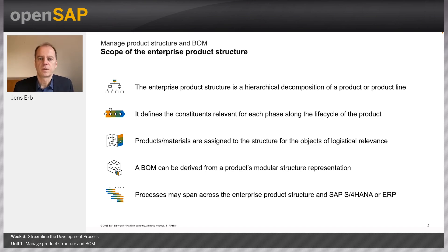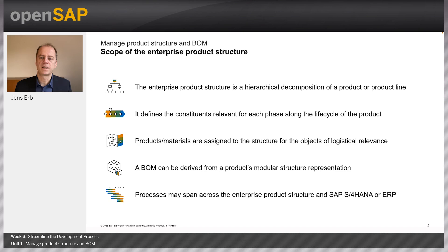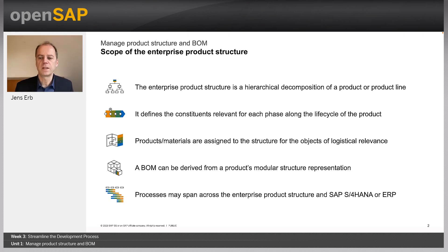Let's start with a look at the scope of the enterprise product structure. Enterprise product structure is a hierarchical decomposition of a single product or an entire product line, so it may have variants. It may be a 150% or 180% structure. It defines all the relevant constituents across the entire product lifecycle. For those objects in the structure that have a logistical relevance, products or materials can be assigned. A bill of material can be derived from this modular product structure, and the process may span across enterprise product structure and SAP S/4HANA or ERP.